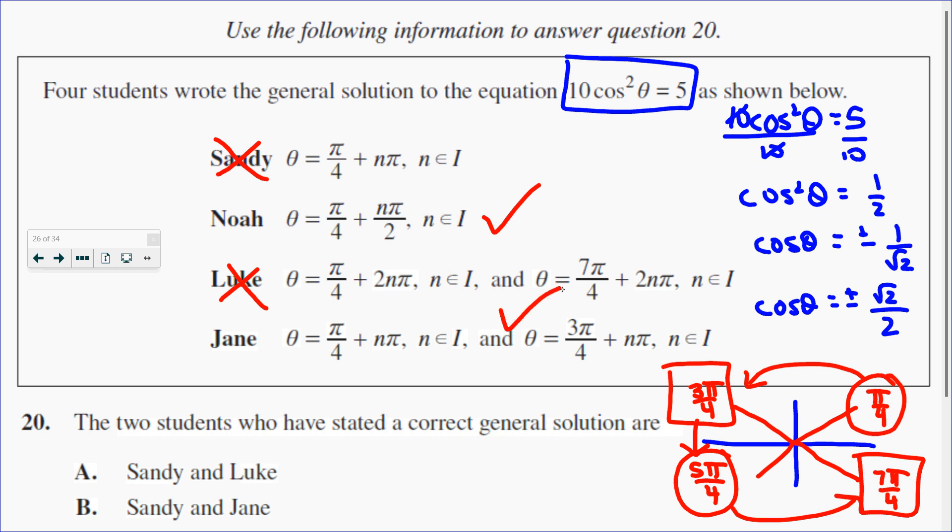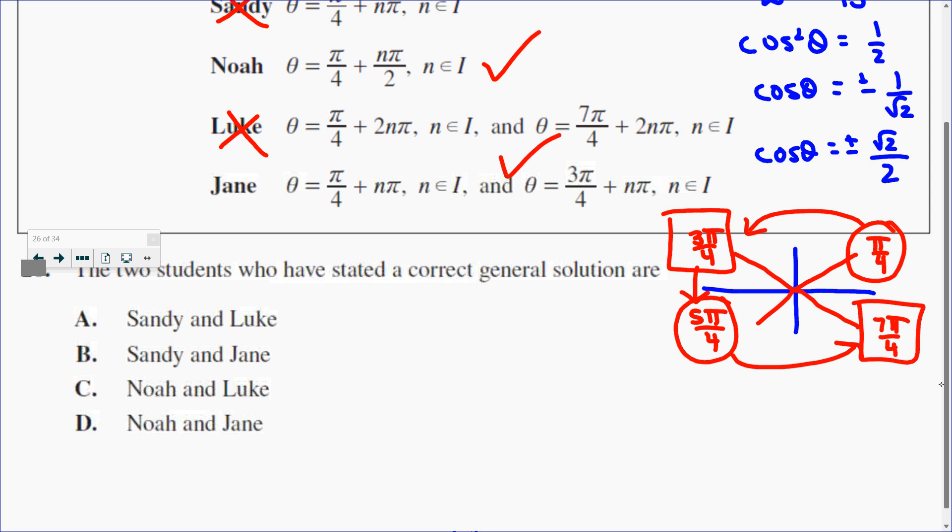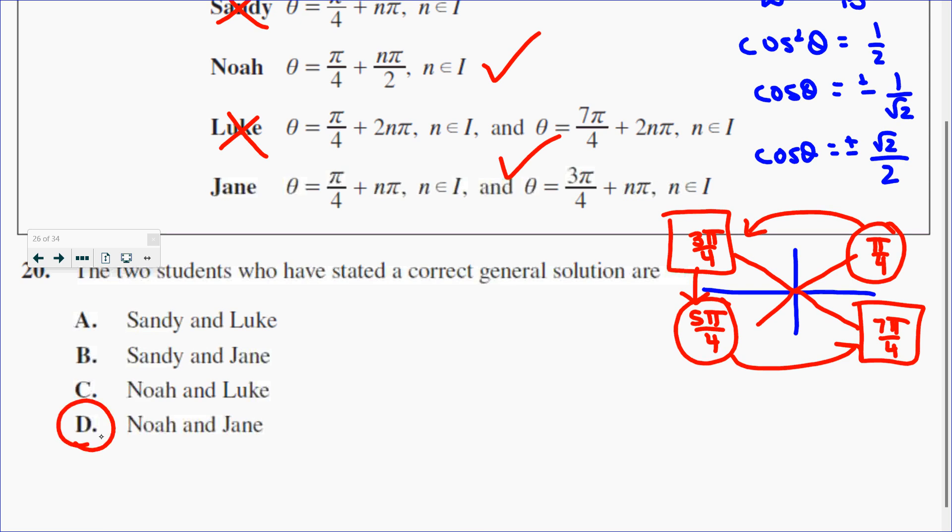I like Noah's solution the best because it combines it all into one nice little restriction, but Jane is also correct. So Noah and Jane are correct, which makes D your correct answer.